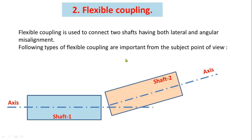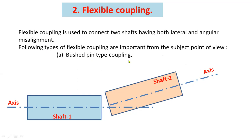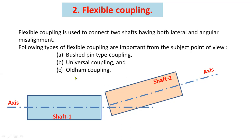The following types of flexible coupling are important from the subject point of view: bushed pin type flexible coupling, also known as modified flange coupling; universal coupling, also known as Hooke's joint; and the third type is Oldham coupling. These three are examples for angular misalignment couplings.